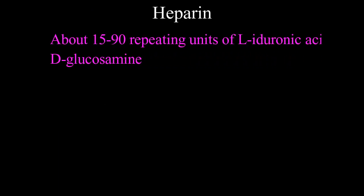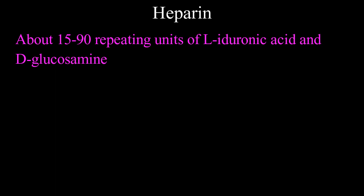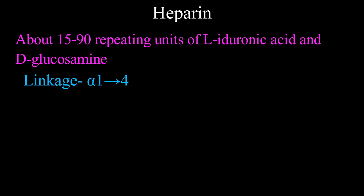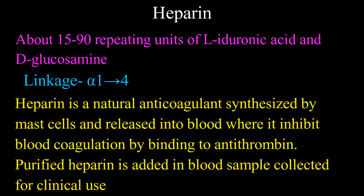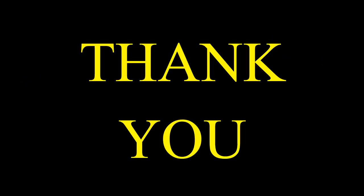Heparin is a natural anticoagulant synthesized by mast cells and released into the blood, where it inhibits blood coagulation by binding to antithrombin. Purified heparin is added to blood samples collected for clinical use. Thank you.